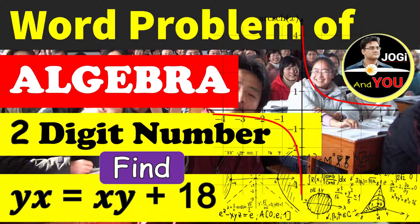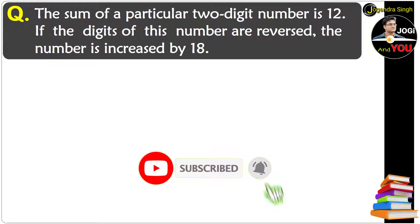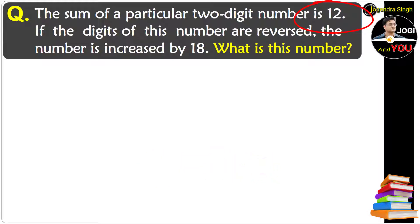Hello everyone, this is Jogundra Singh from Jogi and You. Today I am here with an interesting algebraic word problem. This problem says the sum of a particular two-digit number is 12, and if the digits of this number are reversed, the number is increased by 18. What is the number?